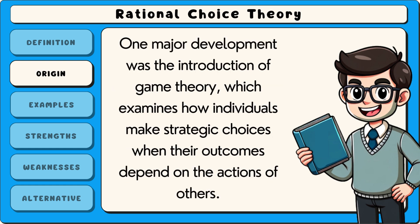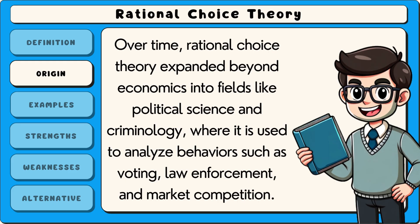One major development was the introduction of game theory, which examines how individuals make strategic choices when their outcomes depend on the actions of others. Over time, rational choice theory expanded beyond economics into fields like political science and criminology, where it is used to analyse behaviours such as voting, law enforcement and market competition.